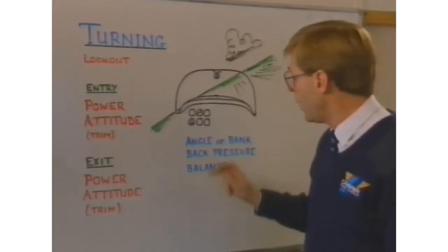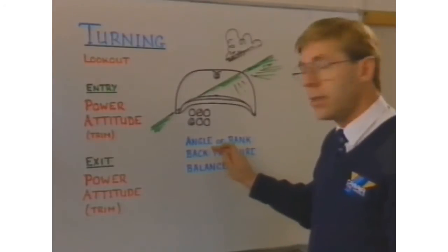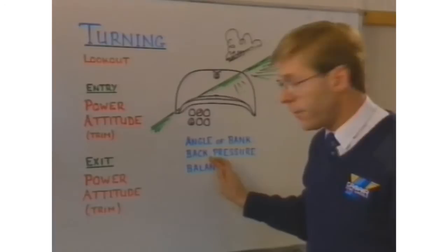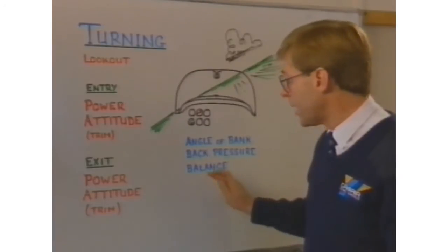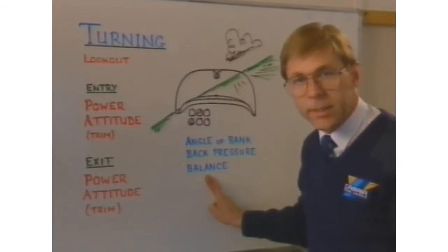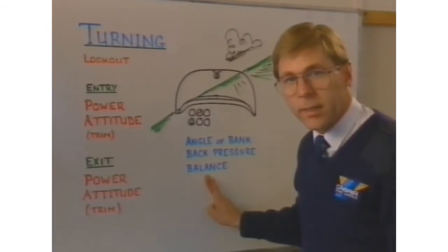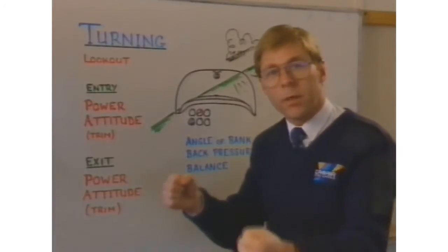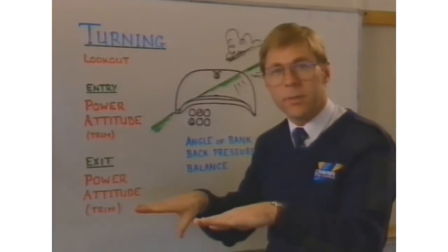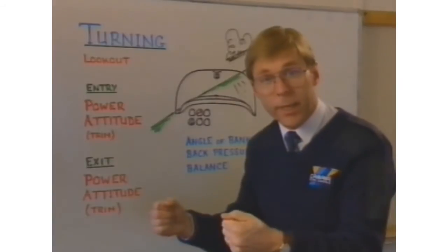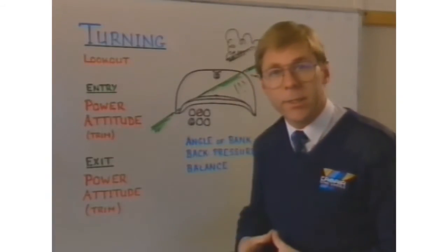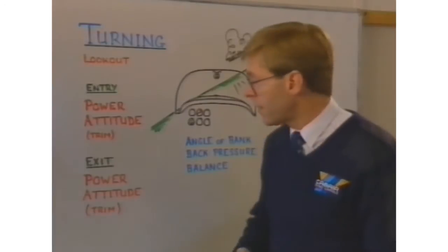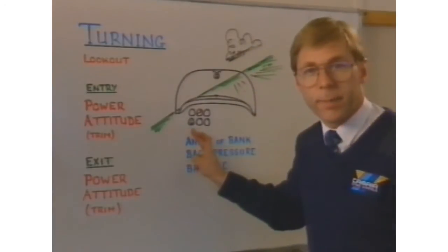During the turn we maintain the bank angle at 30 degrees, with sufficient back pressure to sustain level flight, and a squeeze of rudder as necessary to keep the aircraft in balance. To recover from the turn, the opposite: control column back in the opposite direction, wings level, relaxing the back pressure back to the level flight attitude, and adjusting rudder pressure as necessary to keep the aircraft in balance.